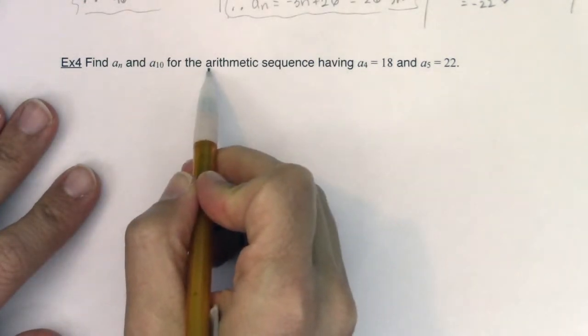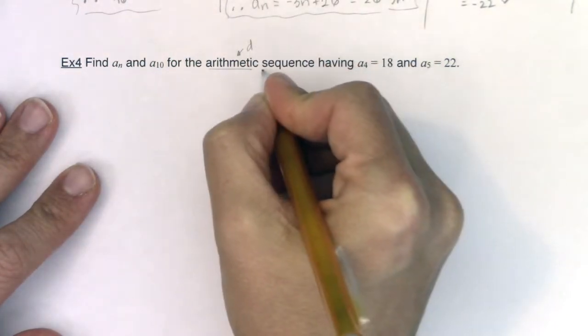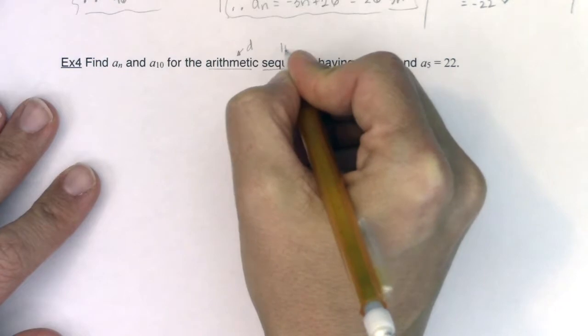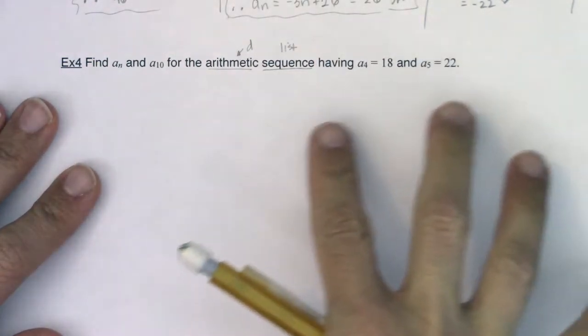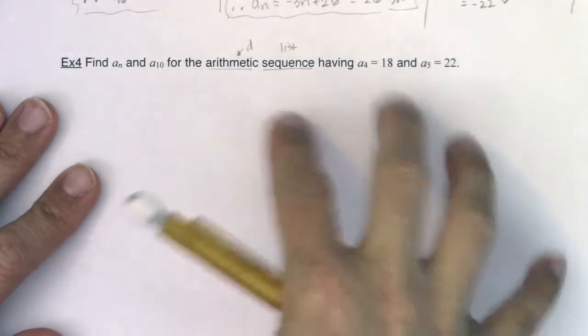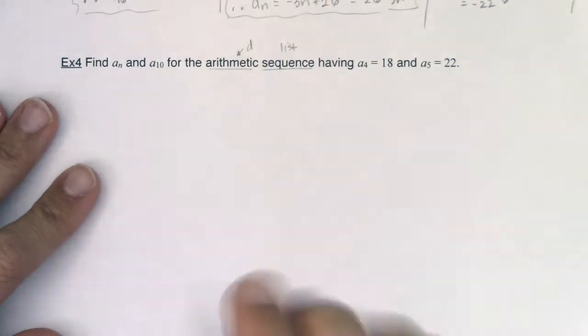Alright, so buzzwords that are standing out for me. I hear arithmetic, so I think to myself, what's d? I hear sequence, so we've got lists that we're going to make. This will get contrasted when we get into 9.4 and we look at series, but arithmetic, d, sequence, list of numbers.